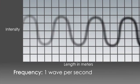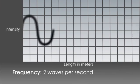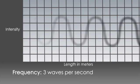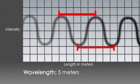Electromagnetic radiation travels in waves. Frequency describes how many waves per second a wavelength produces. Wavelength measures the length of an individual wave in meters.